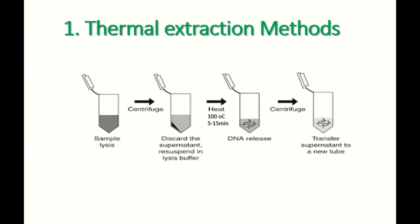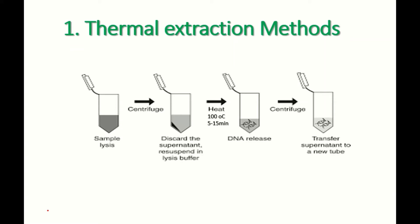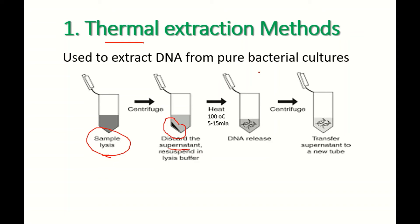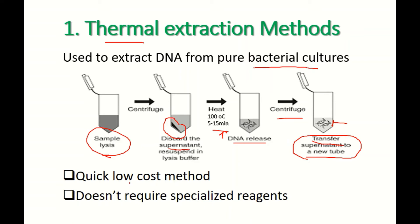Thermal extraction uses heat. You lyse your sample, centrifuge to discard the supernatant, and remain with cells as a pellet — most often used with bacterial cell cultures. You then expose the pellet to heat at 100°C for 5 to 15 minutes to release DNA from the cells, centrifuge, and transfer the supernatant into a new tube. This method is very quick, low cost, and does not require specialized reagents — it is one of the oldest methods.